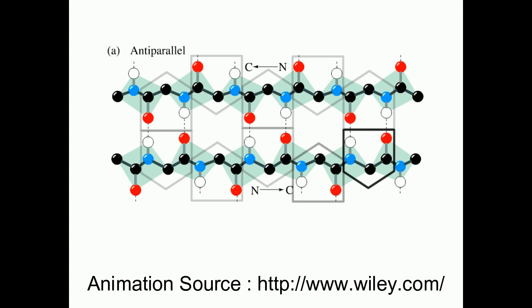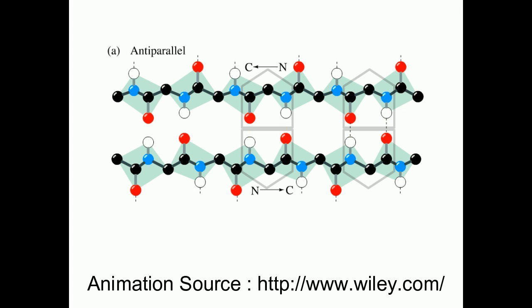The direction of a beta strand is indicated by the sequence of atoms within each residue: first the nitrogen (colored blue), second the alpha carbon, and third the carbonyl carbon. In an anti-parallel beta sheet, adjacent strands run in opposite directions, and the hydrogen bonds between strands are approximately perpendicular to the direction of the strands, due to complementarity between the carbonyl and N-H groups.